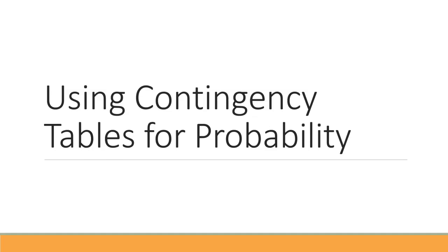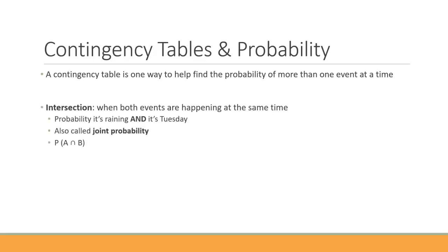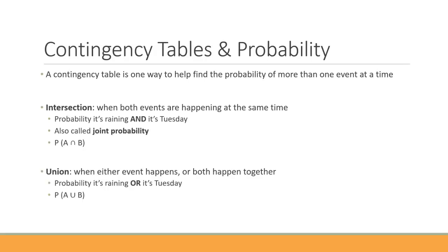Let's talk about ways that you can use a contingency table when finding probabilities. A contingency table is a tool that helps us find probabilities because it helps us when dealing with intersections and unions.